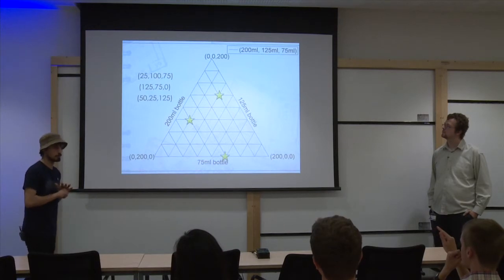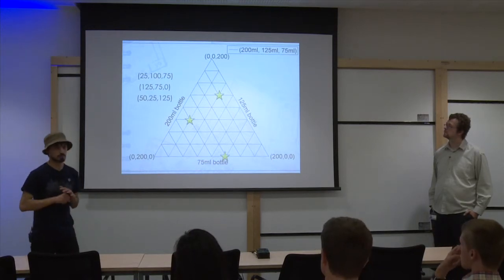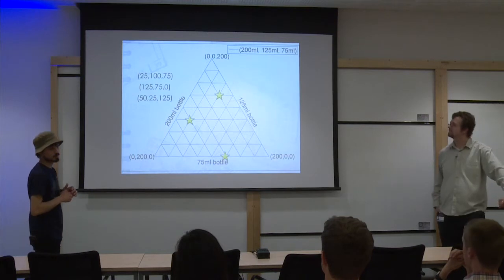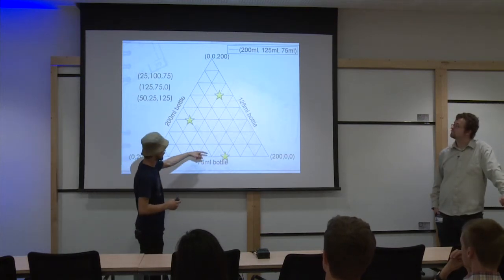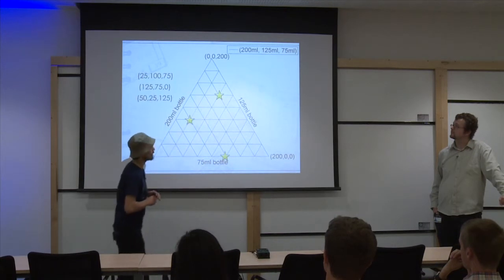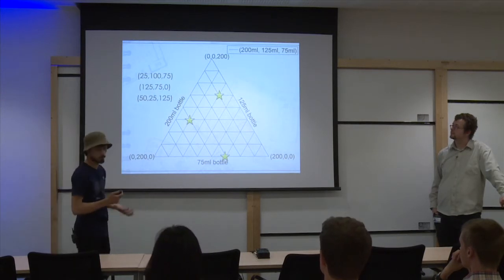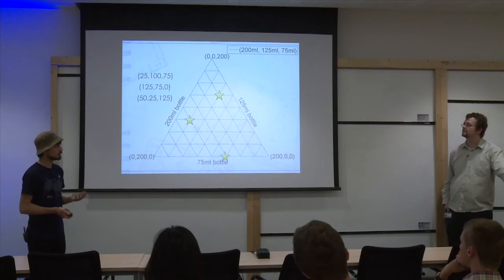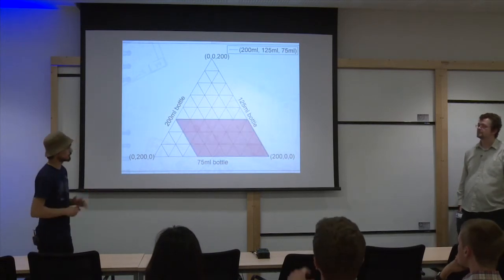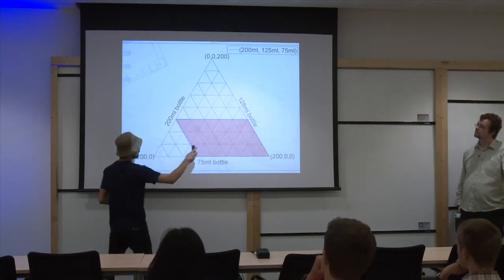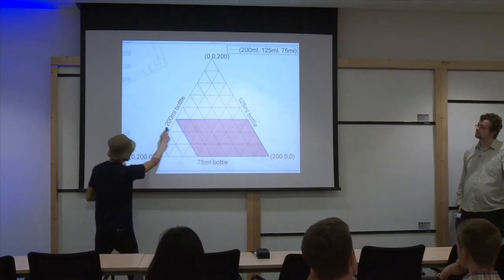There's a problem with this graph as it is at the moment. And it's a similar problem to what we've seen before, but can anyone tell me what it is? So this equates to having 25, 50, 75, 100, 125 milliliters of liquid in the 75 milliliter bottle, which we can't have, like before that we saw with the two-dimensional graph. So let's identify the region that we can work with, and that's this one here. So this is maximum in this bottle is 75, maximum in this bottle is 125, maximum in this bottle is 200.